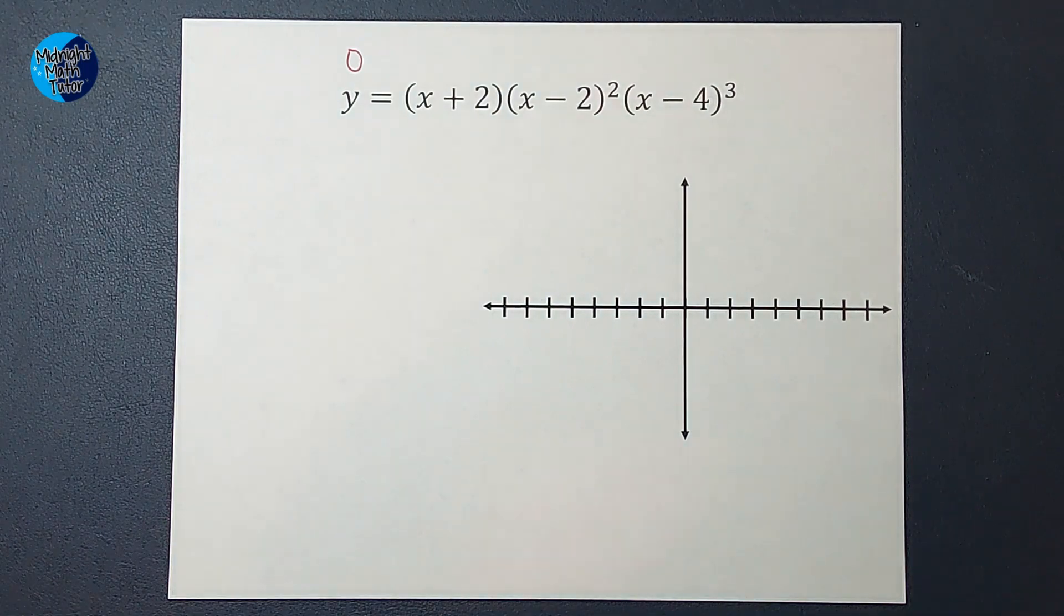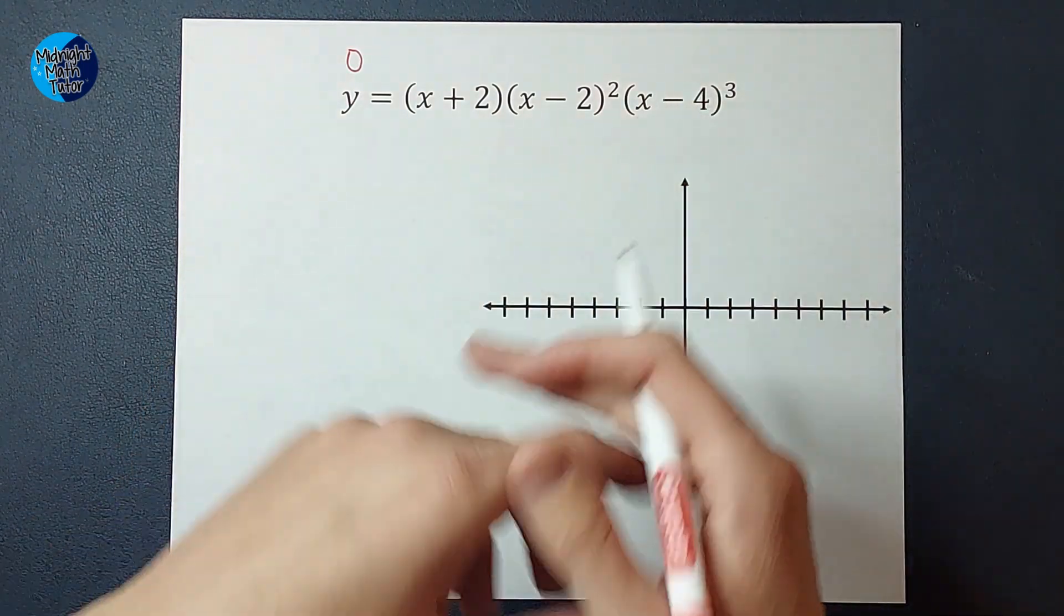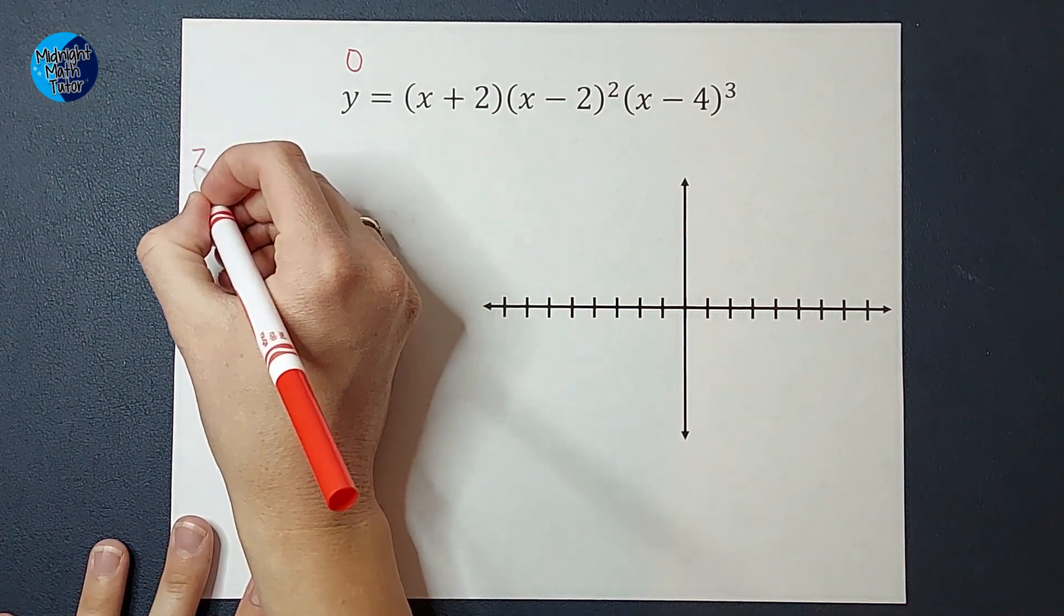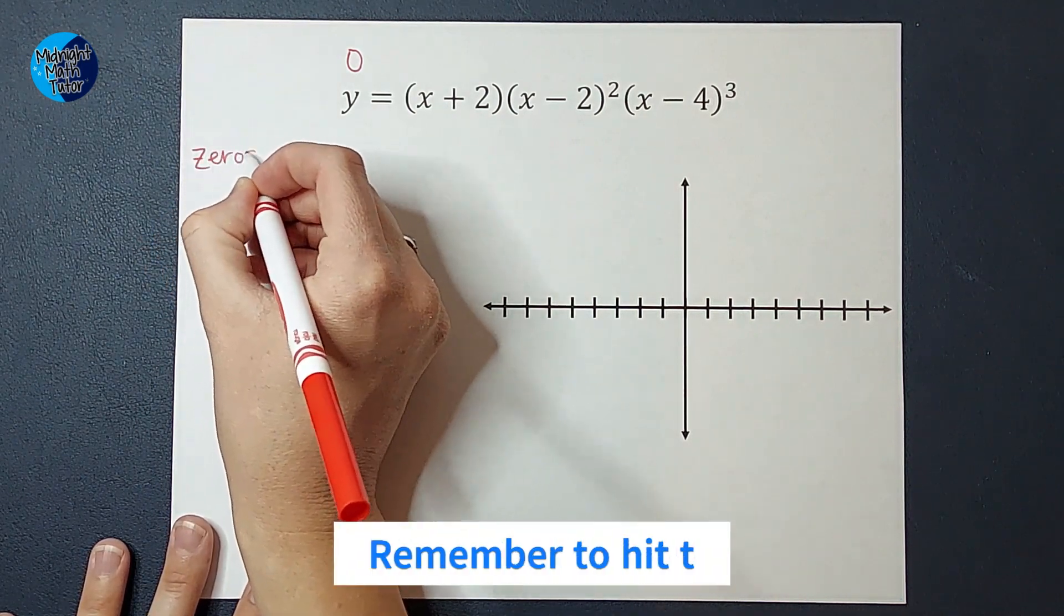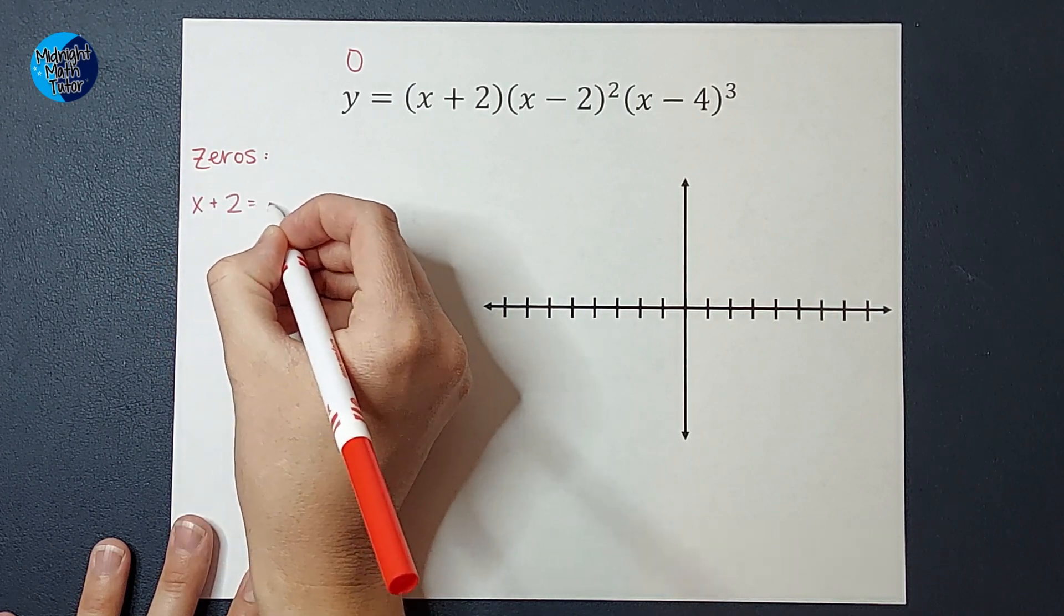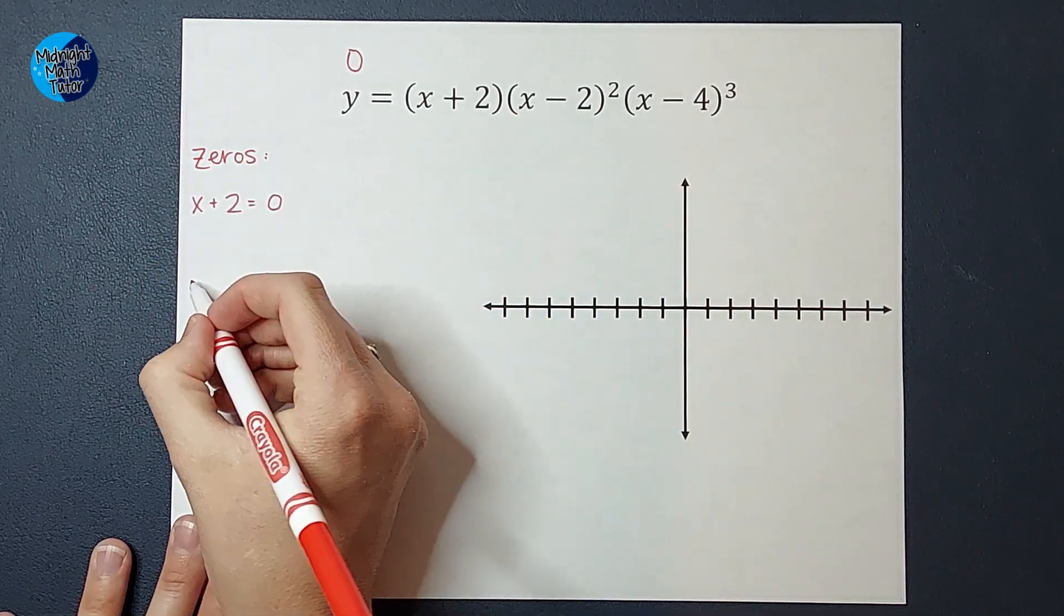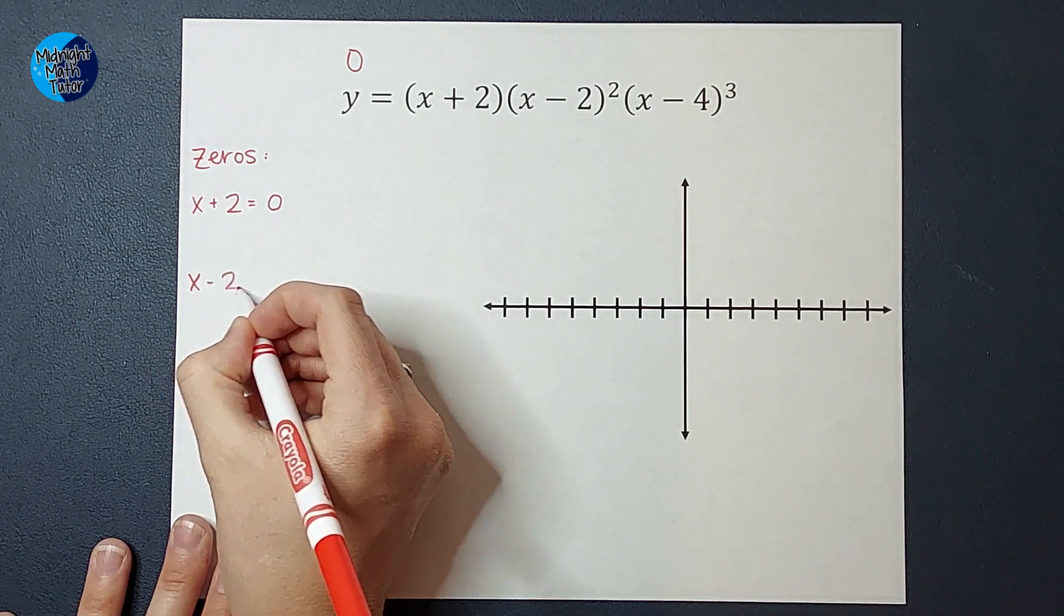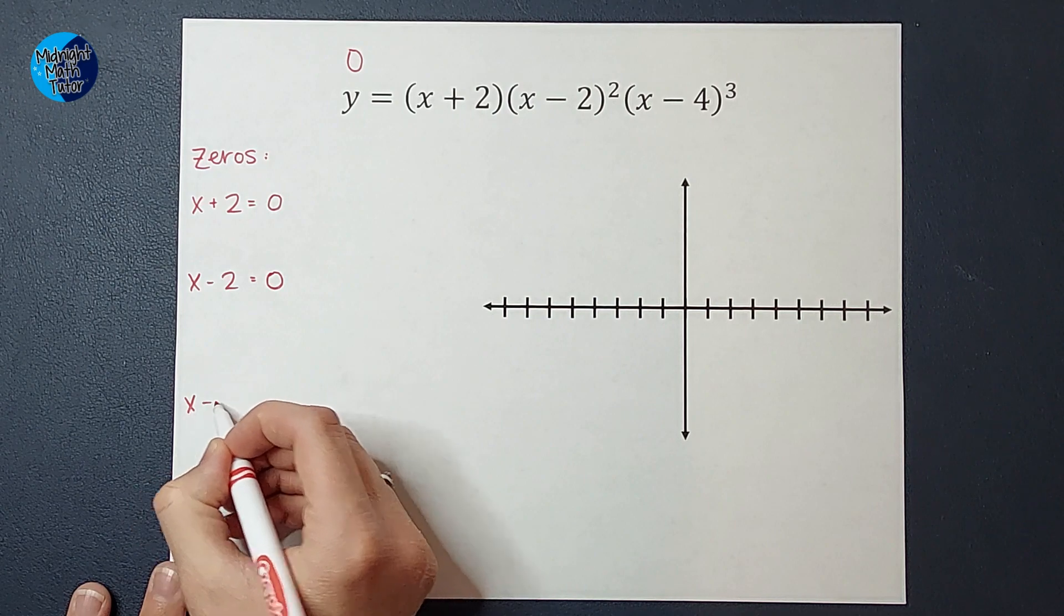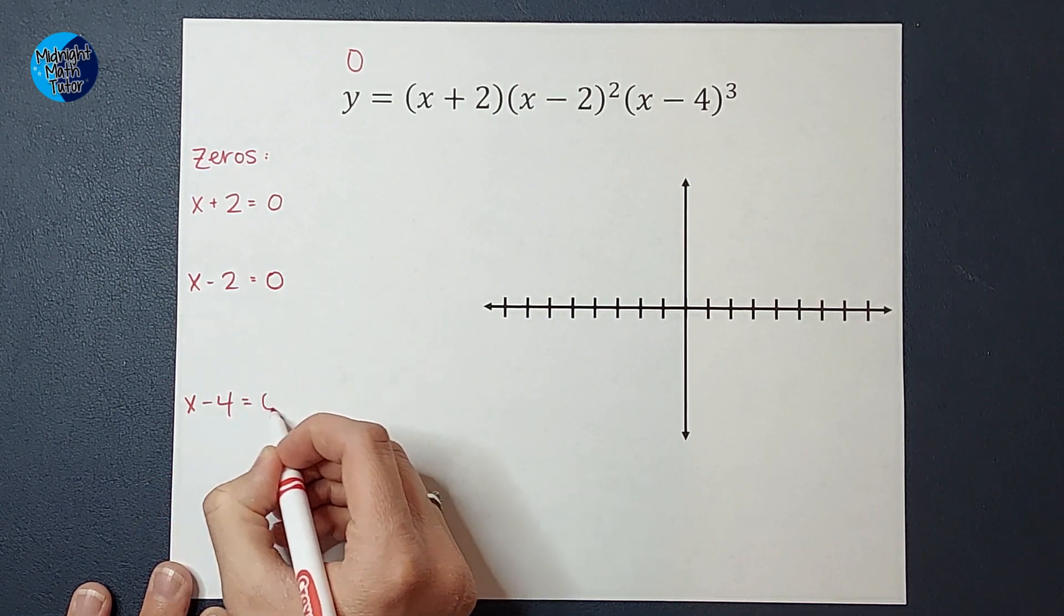And then once you do that, you end up setting each of these equal to zero. So to find my zeros, we are going to set x plus two equal to zero, x minus two equal to zero, and x minus four equal to zero.